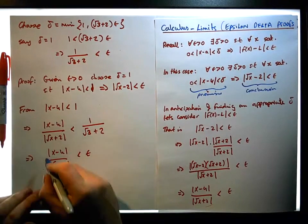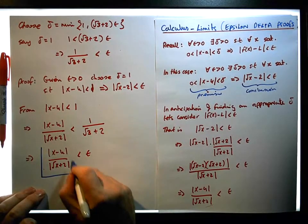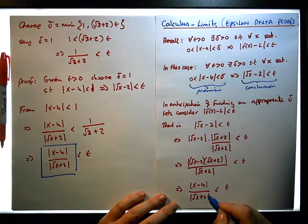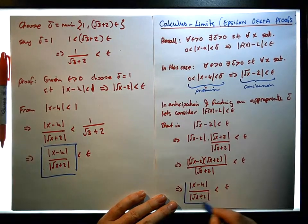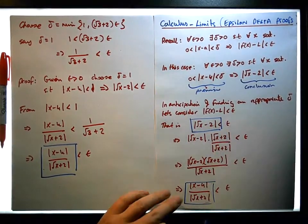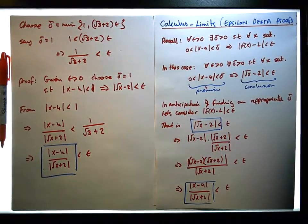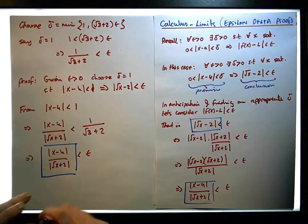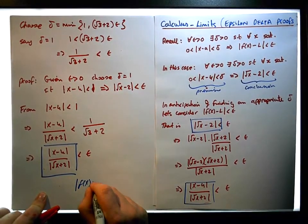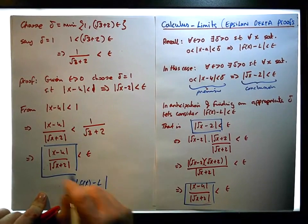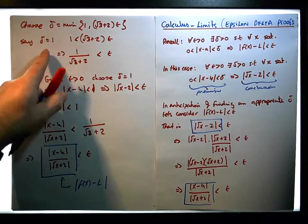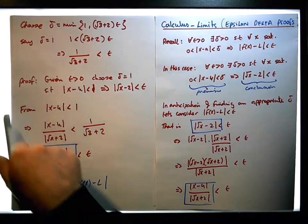This expression here is actually the same as f of x minus L. So we've just proven it for when delta is equal to one. Now let's consider when delta takes the other possible minimum value.